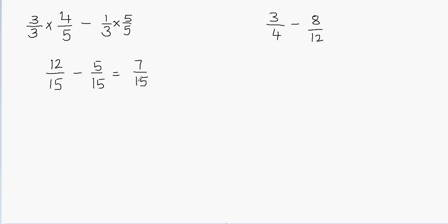So my answer is 7 over 15. I can't reduce this fraction to simplest form — it's already in simplest form because 7 is a prime number, so we can't reduce it anymore. The final answer is 7 over 15.